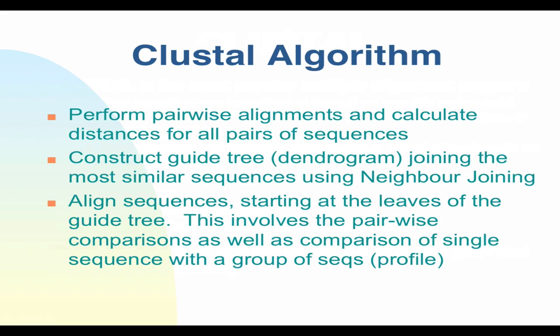The algorithm performs pairwise alignments and calculates distances for all pairs — a global alignment done in a quick-and-dirty way. Changing the lengths of your sequences or trimming off extraneous parts can change the scores in that first step. That pairwise matrix is used to build a dendrogram — a tree that picks which pair of sequences to start with (the closest) and the order in which subsequent sequences will be added. The dendrogram is also published as a result using a neighbor-joining algorithm, which I'll describe in the phylogenetics lecture.